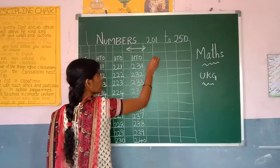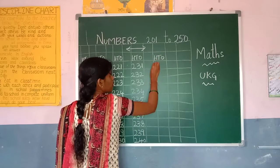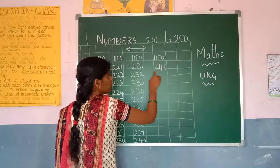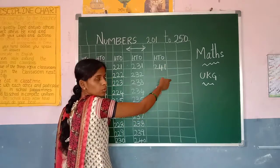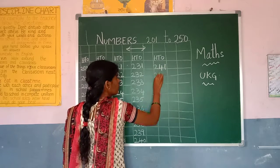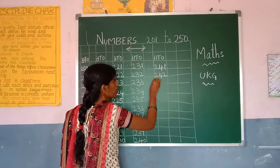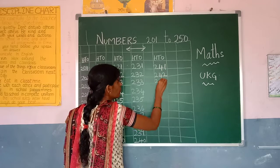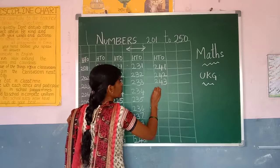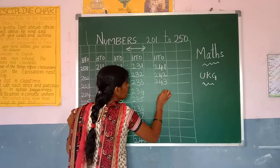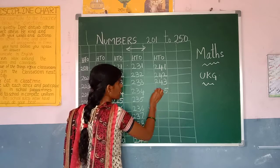Give one line. After 40 comes 41. 241. 242. 243. 245.